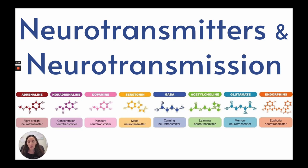Adrenaline is our fight or flight. Noradrenaline is our concentration. Dopamine is our pleasure. Serotonin is our mood. GABA is calming. Acetylcholine is learning. Glutamate is memory. And endorphins are euphoria. We will see how this relates to psychopharmacology during this lecture.